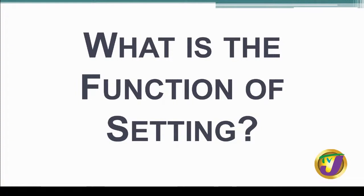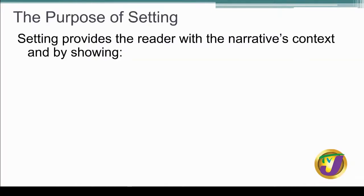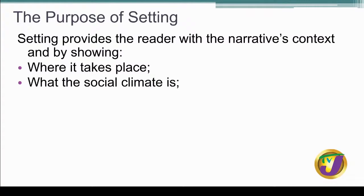If you're going to incorporate setting in your writing, it must serve a function. It provides the narrative's context, shown through several means. Where the action is going to take place — that much is obvious. You also think of the social climate, which has to do with prevailing social constructs. For instance, if you're going to have a good versus evil type of story, then your social context must bring that out — a situation where there's an ongoing struggle in your society with one faction versus another. You want to bring out whatever societal concerns exist in that particular story.